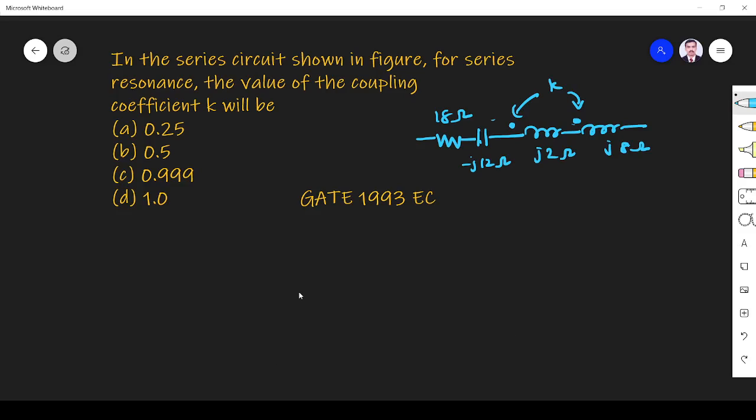Hi friends, in this video let us solve a steady state analysis problem from GATE EC 1993. The question is: in the series circuit shown in figure, for series resonance, the value of coupling coefficient k will be?